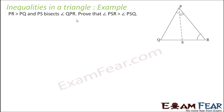So PR is greater than PQ. When PS bisects angle P, these two angles are equal. We have to prove that angle PSR is greater than angle PSQ. Let's number the angles: 1, 2, 3, 4, 5, 6. And angle 1 is equal to angle 2 — that is given.